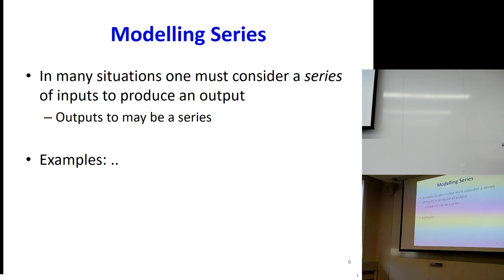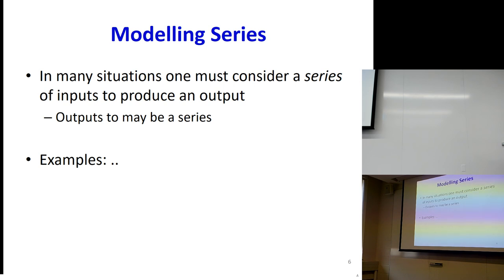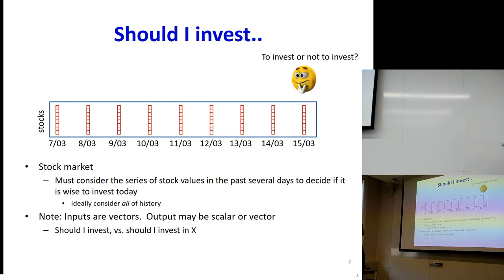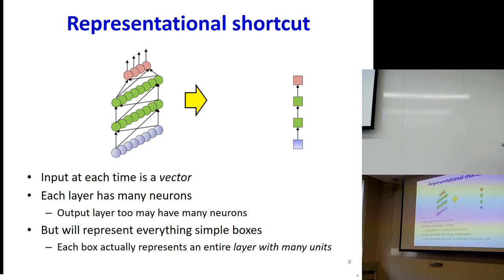The basic problem we are looking at is modeling series. In many situations, one must consider a series of inputs in order to produce an output. Here's an example: say you're a hedge fund manager or investor. You can look at stock indices and prices for the past several days and based on that you must decide whether it's right to invest today, and if so, on what. How would I do this with a neural network? Before I begin explaining, I'll introduce some notation.